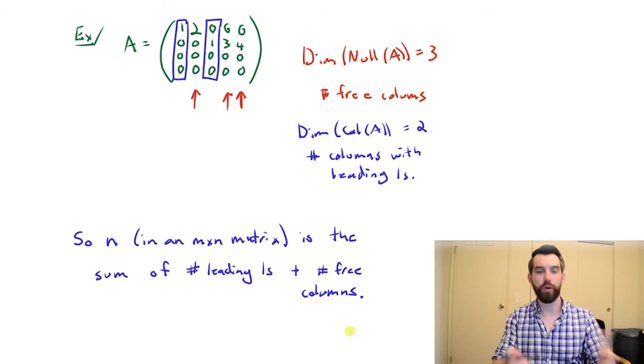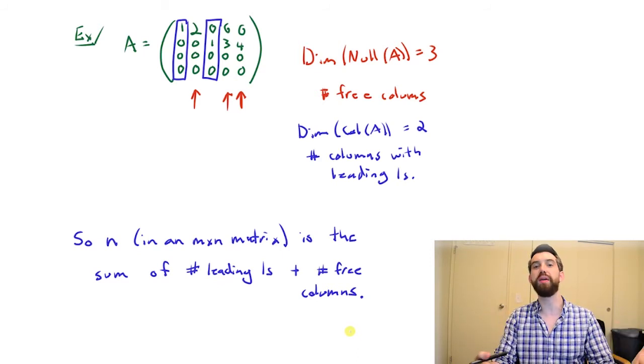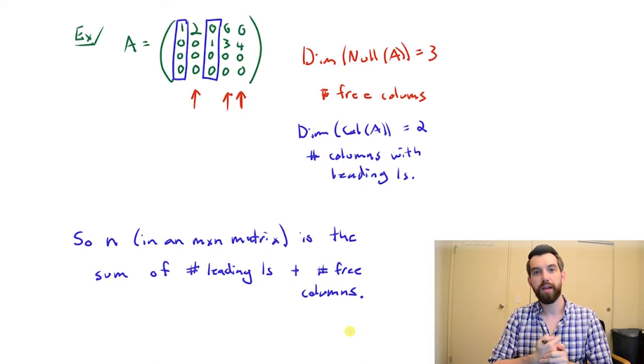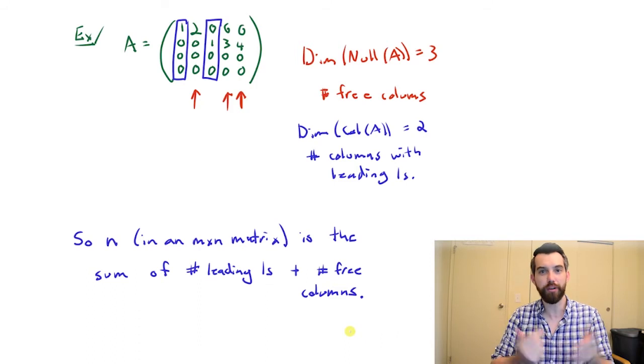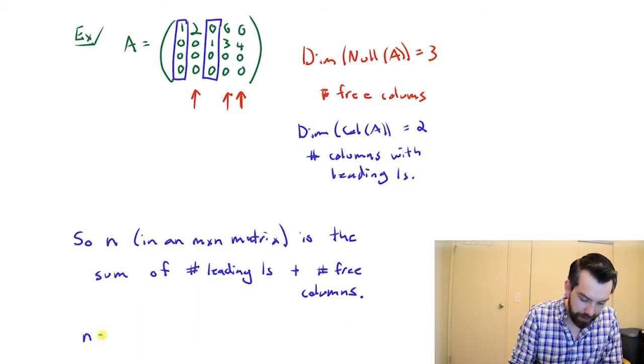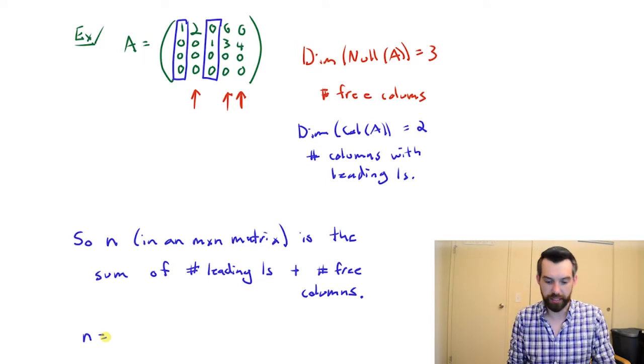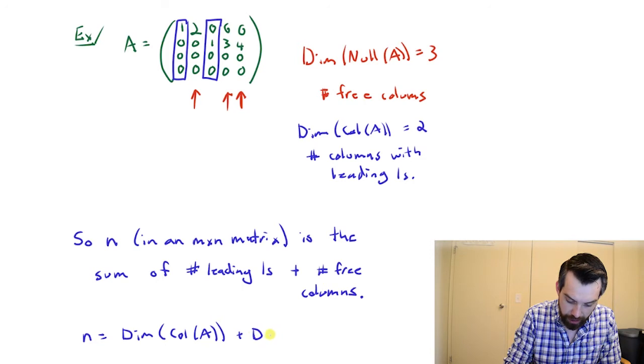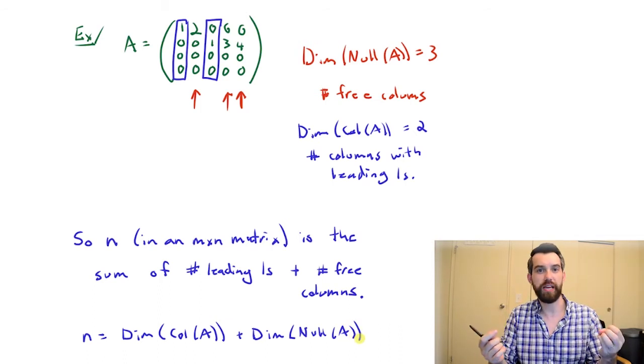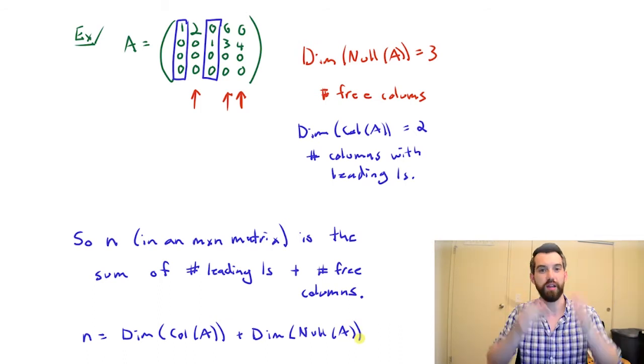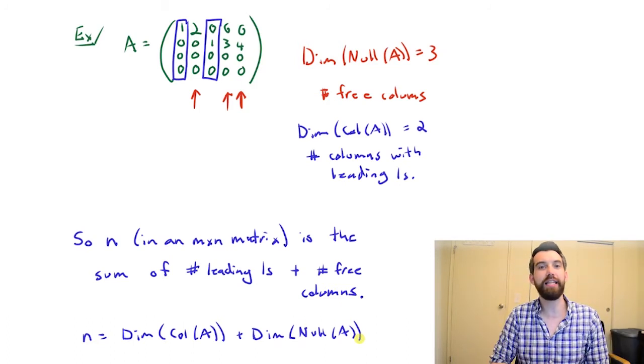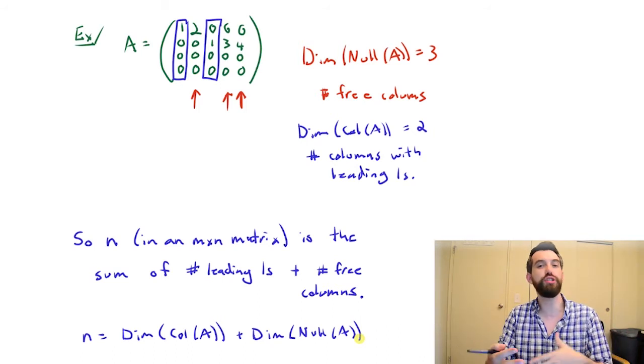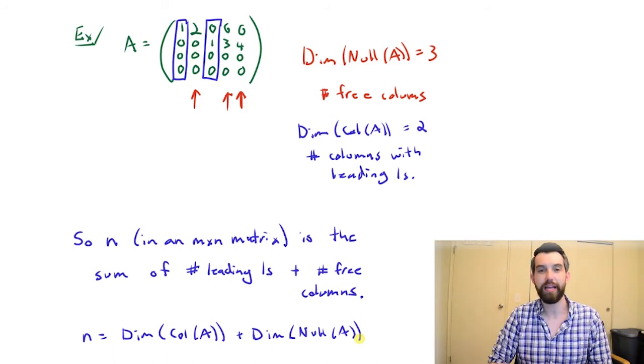This lovely property is not a coincidence of the particular matrix. The Gaussian algorithm means this is always going to be true. So we have this cute little formula. I can say that n, the number of columns I have in my matrix, is going to be the dimension of the column space of the matrix A plus the dimension of the null space of the matrix A. This follows because we identified the column space with the columns that had leading ones, and the number of basis vectors in the null space was associated to the number of free columns, and so they added up in this really nice way.